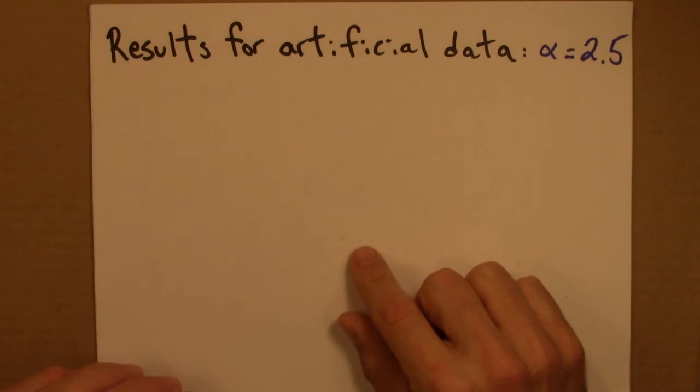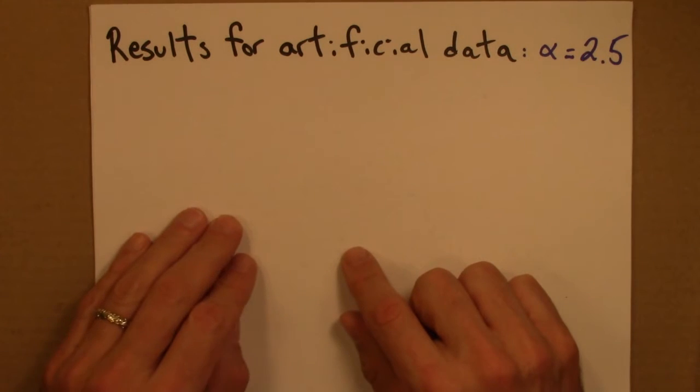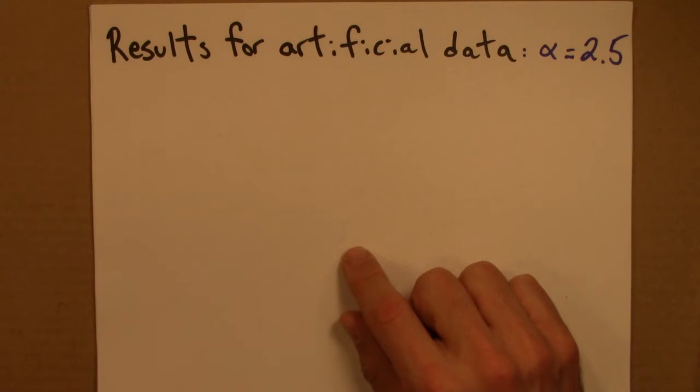So I've talked about a couple of ways that we could estimate alpha. We could work with a log-log plot and do a linear fit of the histogram of p of x. We could do the cumulative distribution function, capital P of x, or we could use this maximum likelihood estimator.